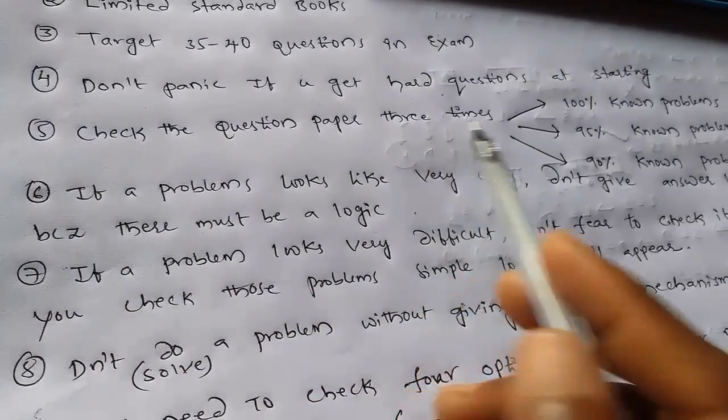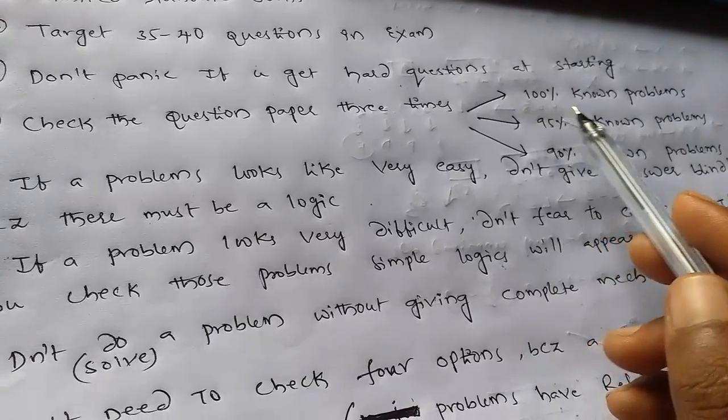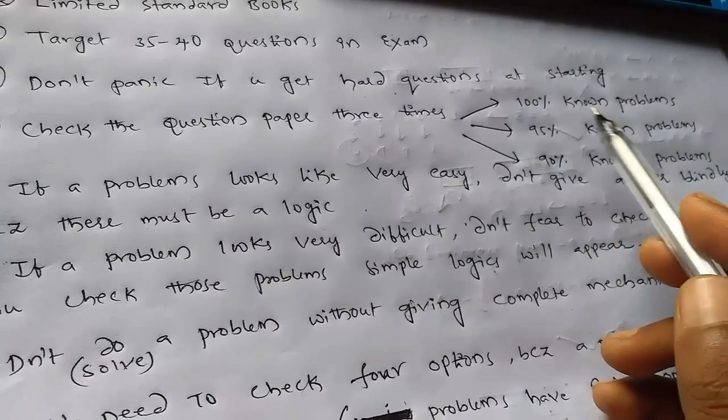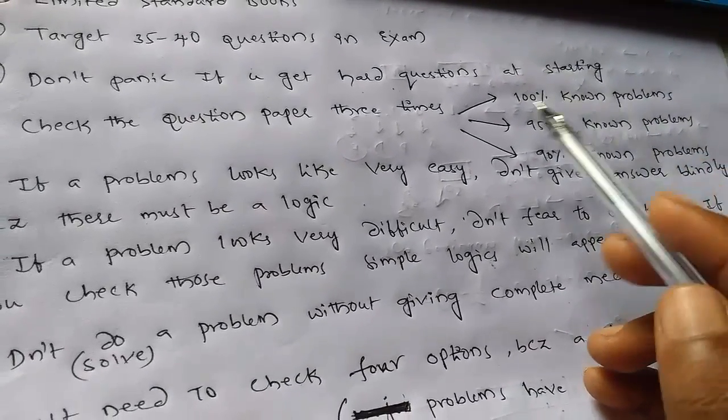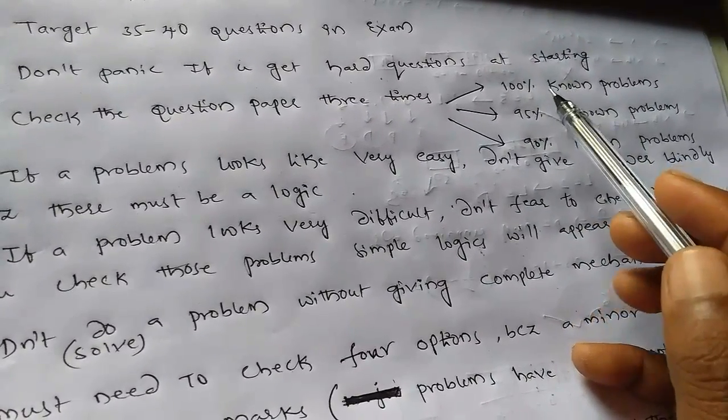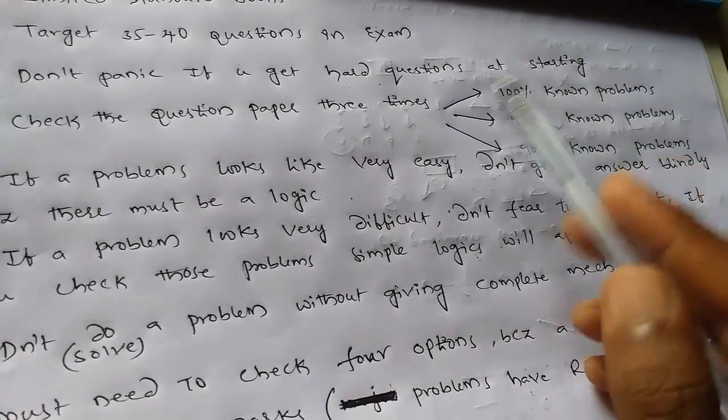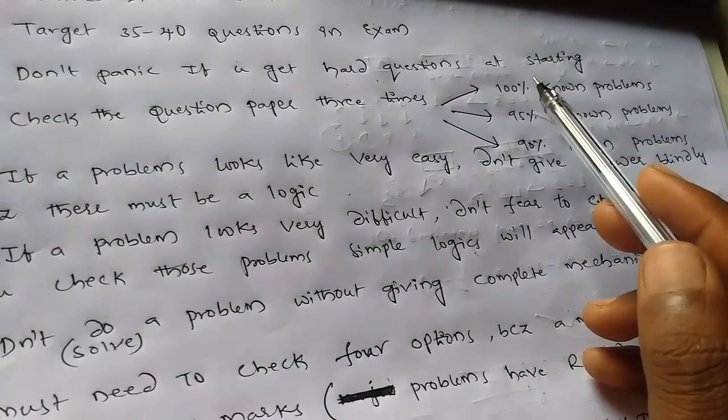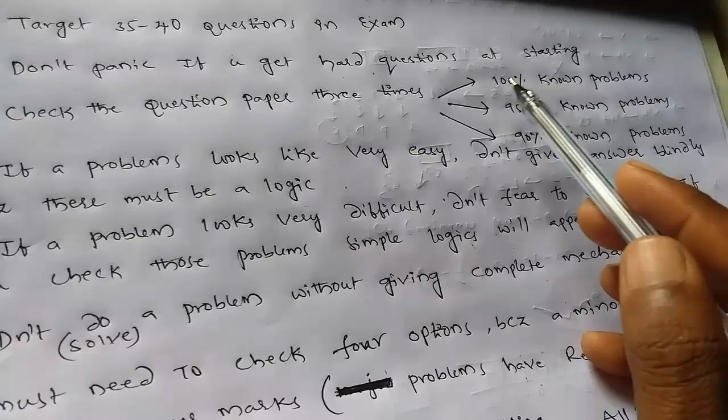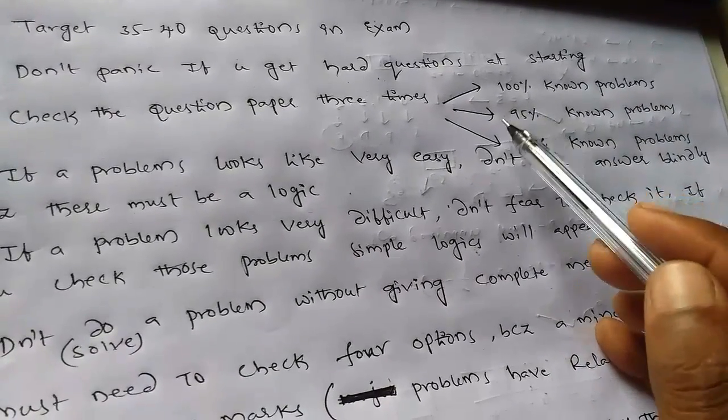Check the question paper three times. At first, when you are going to do the problems, do the problems which are known. That means if you know 100%, if it is right, then give an answer for it. In the first check of the question paper, do like that. If you do at least 10 questions or 15 questions throughout the paper at first attempt, then go for the next.